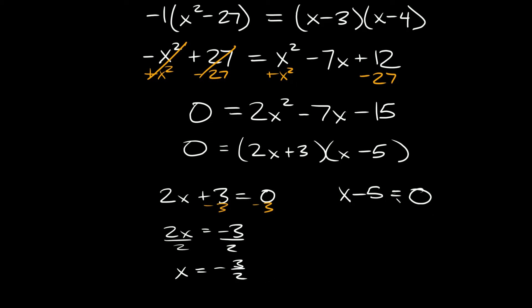And over here x minus 5 equals zero. We can see that x must equal positive 5. So here are our two answers: x equals negative 3 halves and x equals 5.